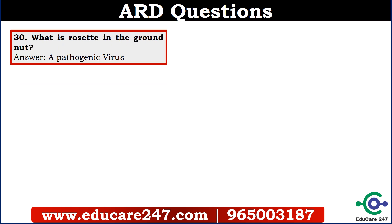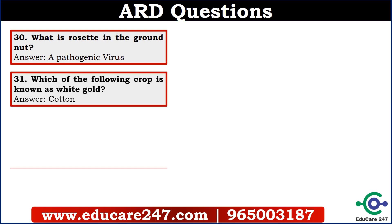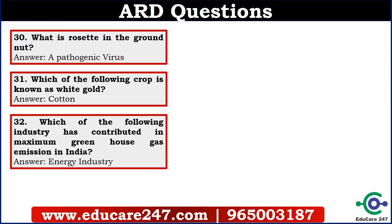The thirtieth question is: what is the rosette in groundnut? It is a pathogenic virus — a kind of virus called rosette. The thirty-first question is: which of the following crop is known as white gold? The answer is cotton. The thirty-second question is: which of the following industry has contributed the maximum greenhouse gas emission in India? The answer is the energy industry. Some students are confused with agriculture or forestry industry, but as per my best knowledge, it is the energy industry.